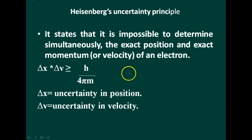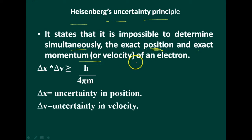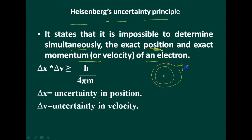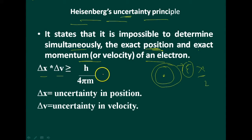Next topic: Heisenberg uncertainty principle. It states that it is impossible to determine simultaneously the exact position and exact momentum of an electron. In the orbit where electrons move around the nucleus, the exact position and exact momentum cannot be calculated simultaneously. The formula is: Δx × Δv ≥ h/(4πm), where Δx is uncertainty in position and Δv is uncertainty in velocity.